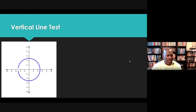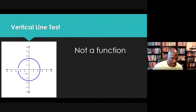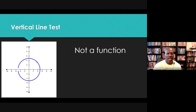Let's look at another graph. If you imagine drawing a vertical line, you'll see pretty much every vertical line you draw is going to hit the graph twice, which means this is not a function. For example, when x is two, the function has two values — it looks like positive four up here and negative four down here. So it has two values in the range assigned to one value in the domain, and therefore that cannot be a function.